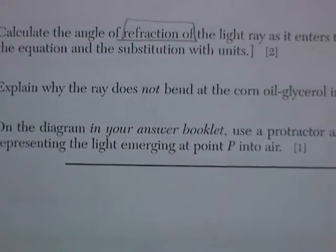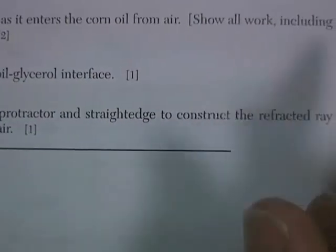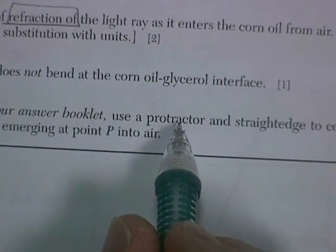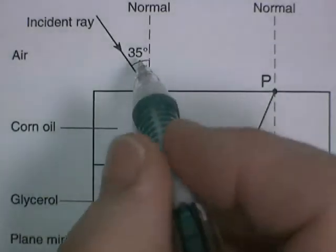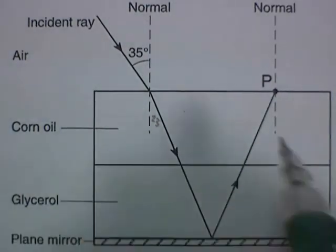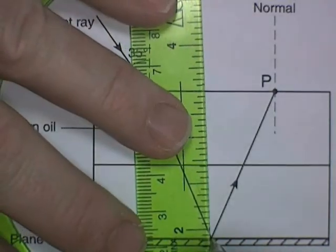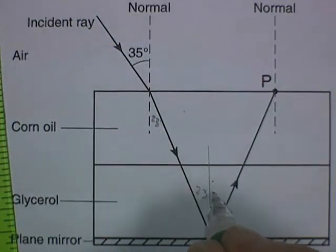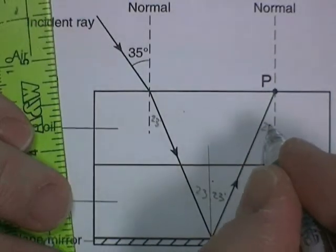All right, now the last one. On the diagram in your answer booklet, use a protractor and a straight edge to construct the refracted ray representing the light emerging at point P. So, here's the situation. The light bends here, comes in at about 22, 23 degrees, 22.9. It's going to come down here and hit at, you know what? Alternate interior angles. This is going to be about 23 degrees. And then it's going to come off here at 23 degrees. I like the geometry.